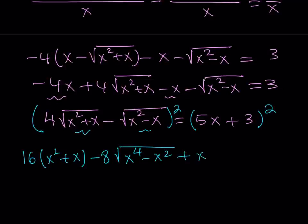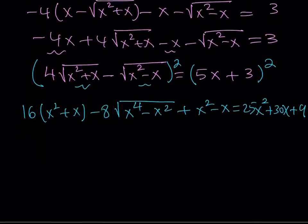Plus x squared minus x, which comes from b squared. And the right-hand side can be written as 25x squared plus 30x plus 9. That's just like a perfect square.